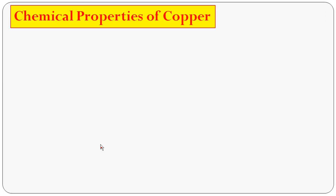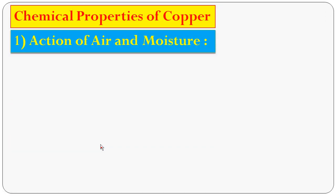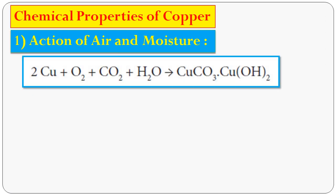Now the chemical properties of copper. First, action of air and moisture: copper reacts with air (O₂) and moisture (H₂O) in the presence of carbon dioxide to form CuCO₃·Cu(OH)₂, which is called malachite — also known as copper carbonate. A green layer of copper carbonate, CuCO₃·Cu(OH)₂, is formed on the surface.